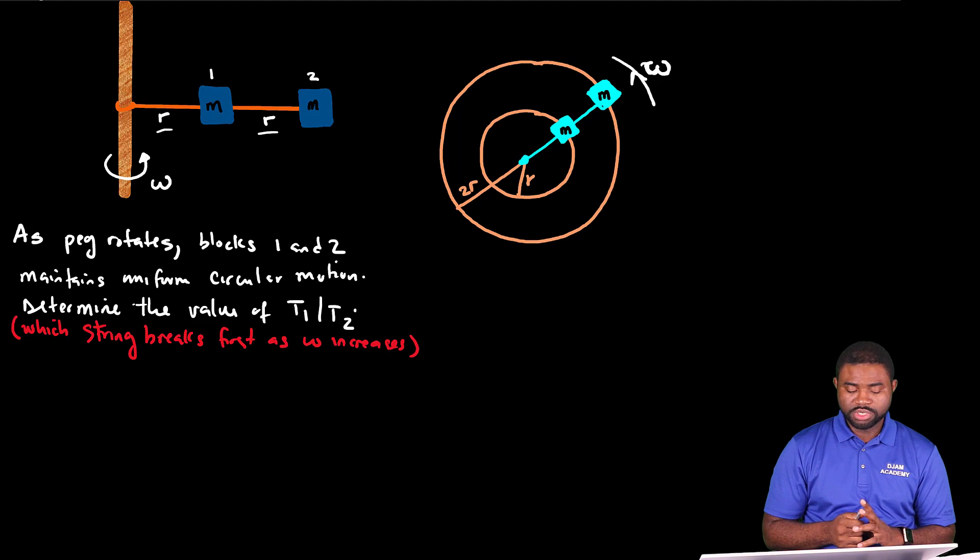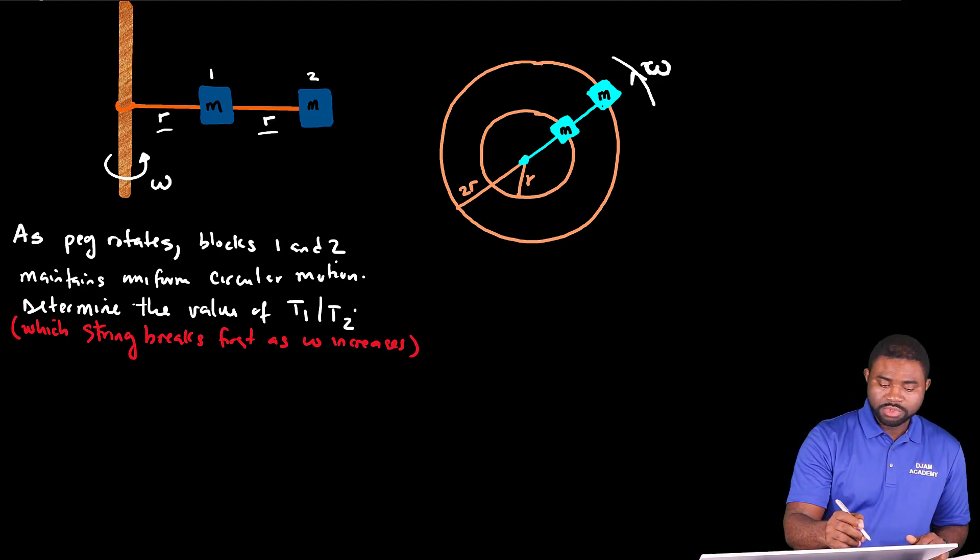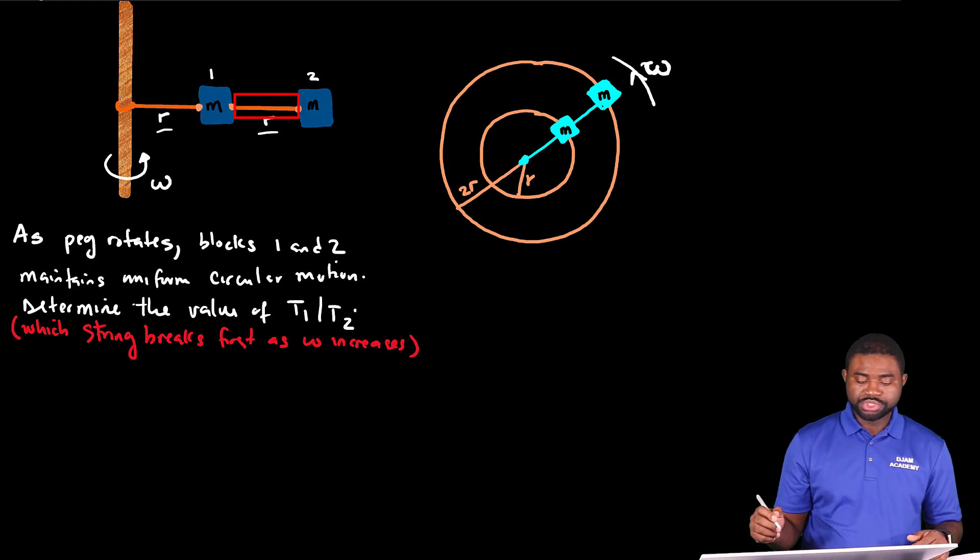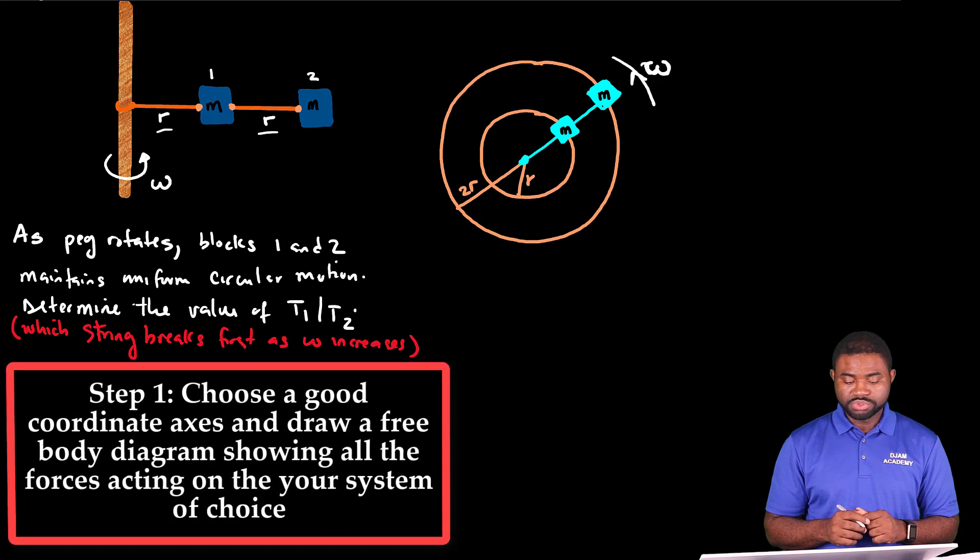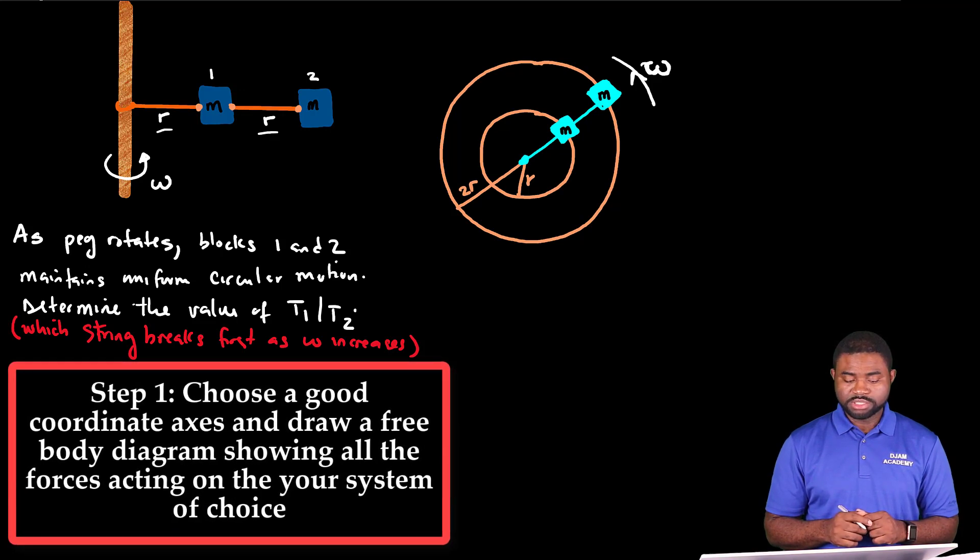In uniform circular motion, we are asked to determine the ratio of the tension in both strings. Keep in mind that string one is connected to block one and string two is connected to both block one and block two. So the very first thing that we need to do is to draw the free body diagram acting on both objects.